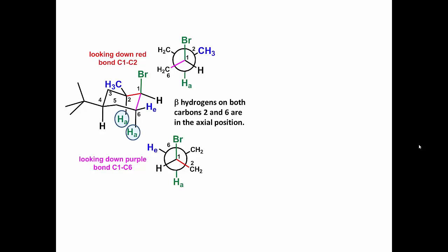We see that when the bromine is in the axial position, there are beta-diaxial protons on carbons 2 and 6.